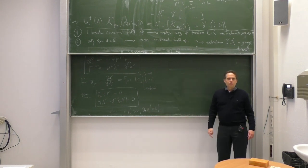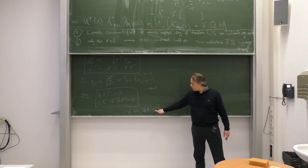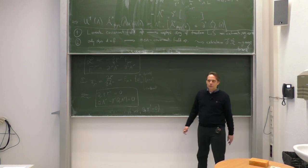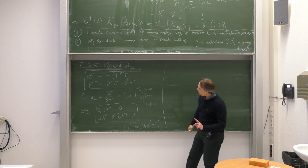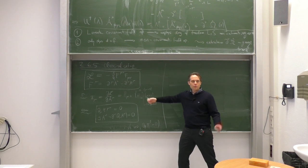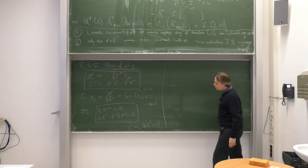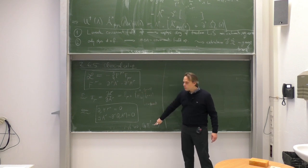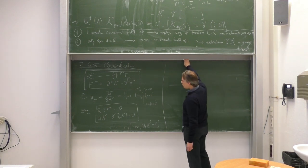How many constraints did we have in the massive case? We also had two constraints, because there was a similar equation. However, that equation involved the mass term and it involved the A0 field — there was a constraint involving the A0 component. That is where the difference comes from between the massive and the massless case. In the massive case, we had A0 here and pi 0 here, so two constraints — one for pi 0 and one for A0. The Poisson bracket between the two constraints did not vanish, meaning they were of second class, which is the simpler kind. Here, there is no A0 appearing, only the pi's in the constraints, and therefore the Poisson bracket between the two constraints vanishes. We have first-class constraints, which corresponds to gauge invariance.